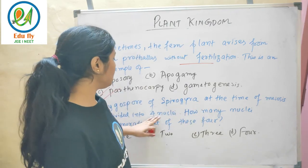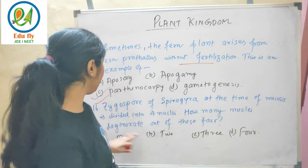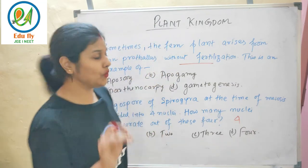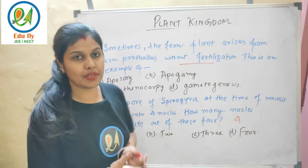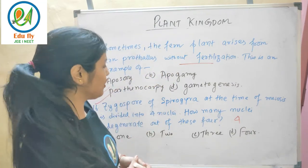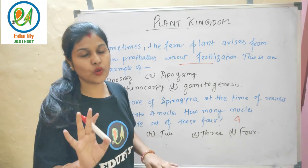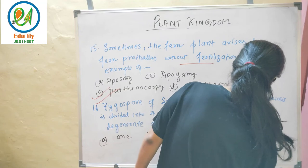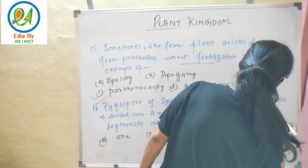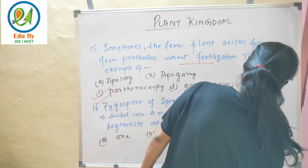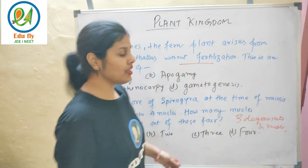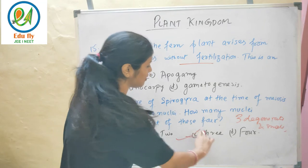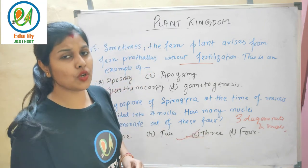The zygospore of Spirogyra at the time of meiosis is divided into four nuclei. Out of these four nuclei, three degenerate and become small. Only one cell remains and continues the cycle. So the answer is three nuclei degenerate.